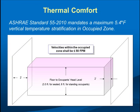The occupied zone is defined in ASHRAE Standard 55 and several other standards. It is the space from the floor to six feet (or three and a half feet for seated occupants) and within two feet of the walls. In that space, air velocity should be less than 50 feet per minute at all points. Note that the occupied zone does not extend all the way to the wall — sitting next to a window is technically outside the comfort zone.